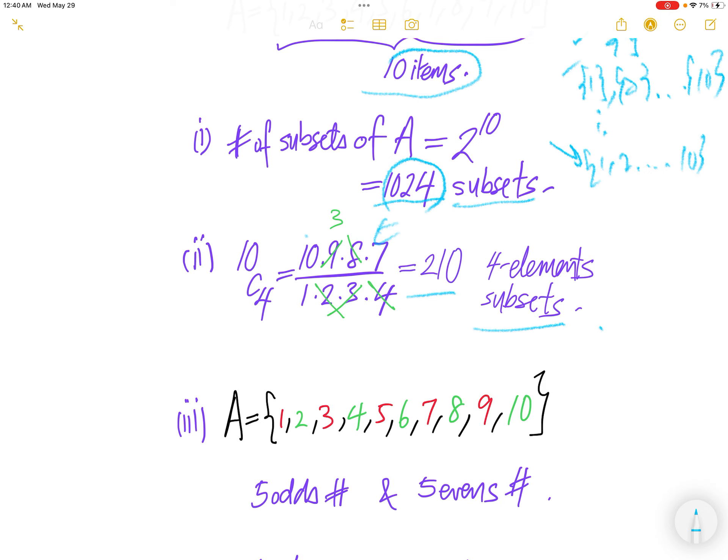Okay, for those who have forgotten the formula, 10 choose 4 is equal to upstairs factorial divided by downstairs factorial times upstairs minus downstairs factorial, which is equal to